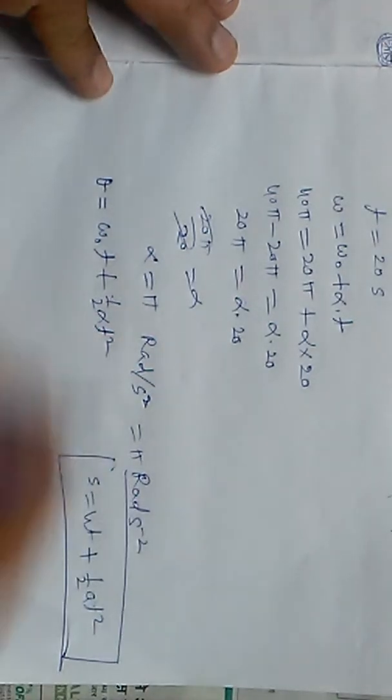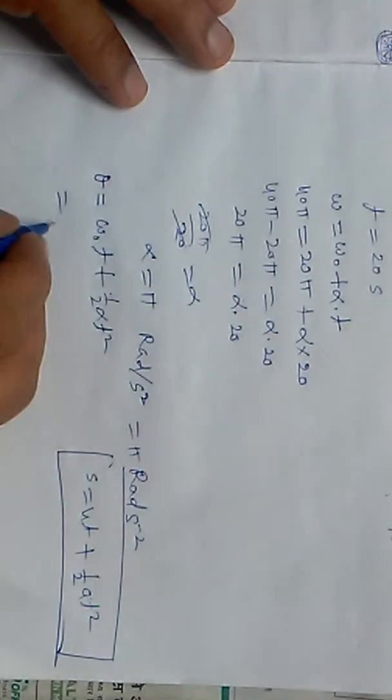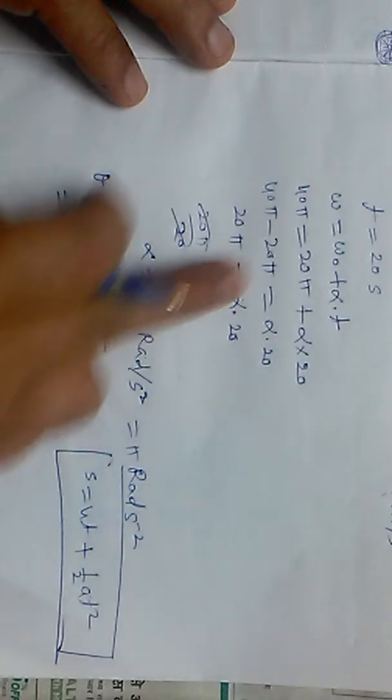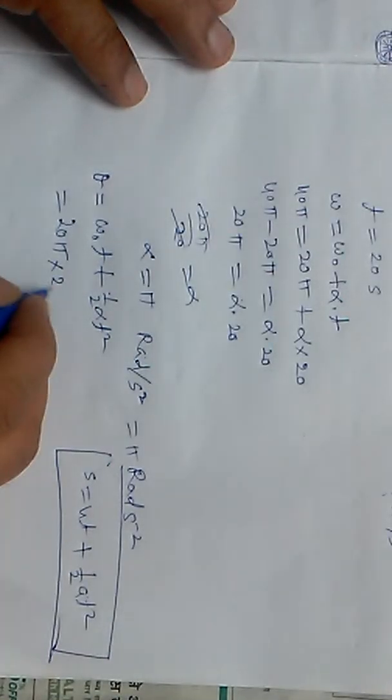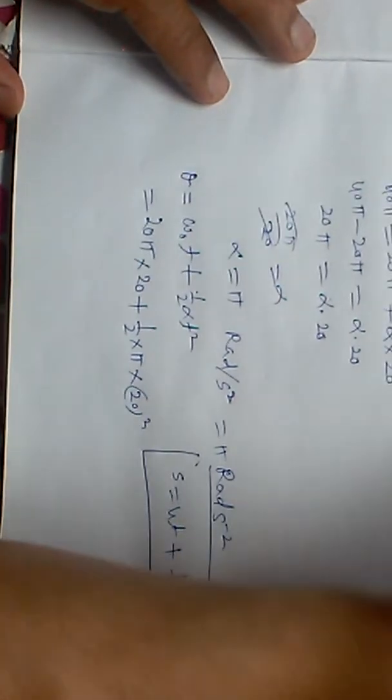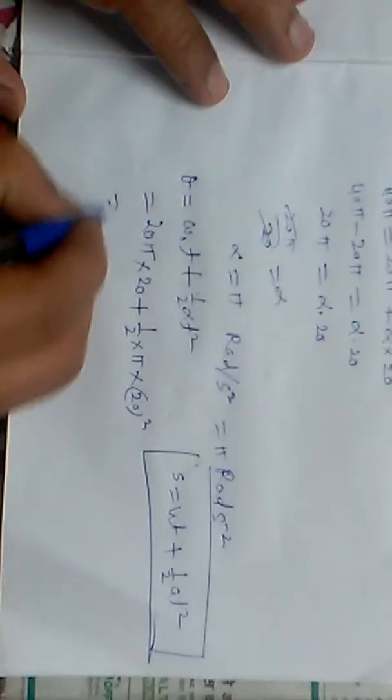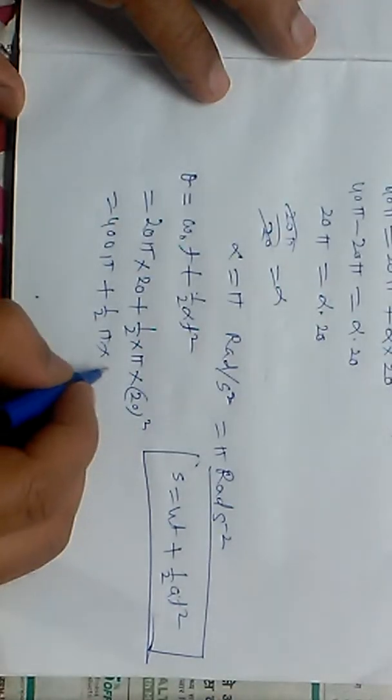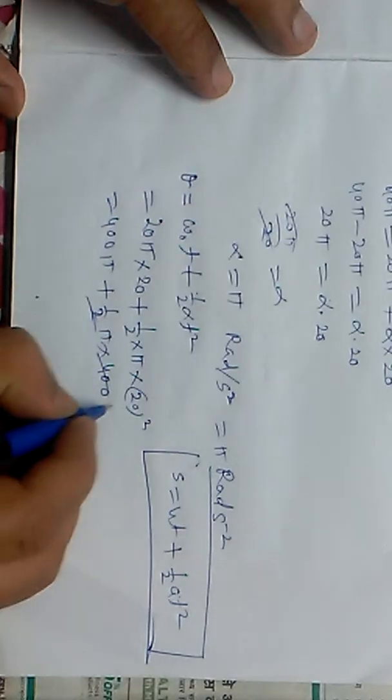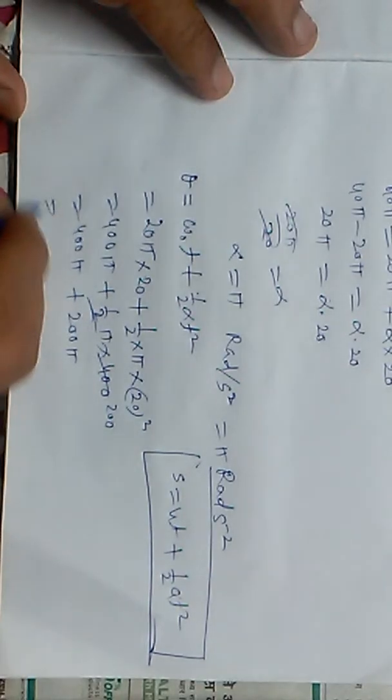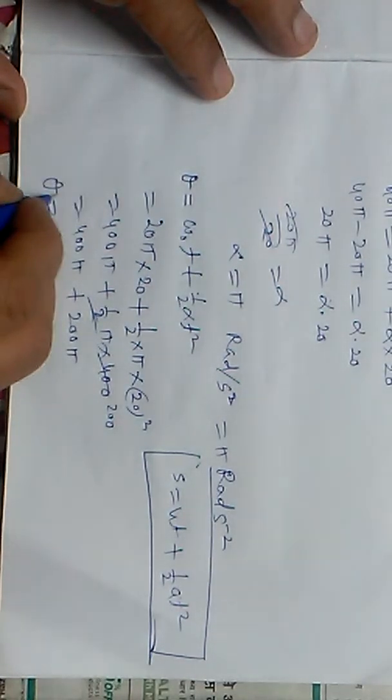Theta equals omega not times t plus one half alpha t squared. Omega not value is 20 pi, t is 20, plus one half times alpha, which is pi, times 20 squared. So 400 pi plus one half pi times 400. That's 400 pi plus 200 pi equals 600 pi radians.